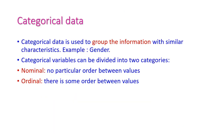First, let us see categorical data. Categorical data are used to group information with similar characteristics. For example, we can take the attribute gender. Gender may contain two values: male and female. That means all the attributes which belong to male will form one class and all the attributes which belong to female will form another class.